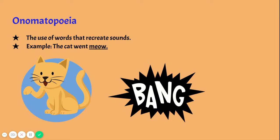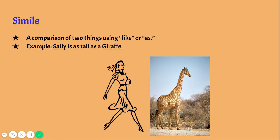Now we're going to talk about similes. A simile is a comparison of two things using 'like' or 'as.' For example, 'Sally is as tall as a giraffe' — we're comparing Sally to a giraffe using the word 'as' to connect them. You could also say 'Sally is like a giraffe,' still comparing her to a giraffe but using 'like' instead of 'as.'